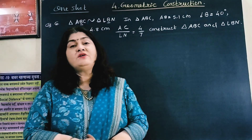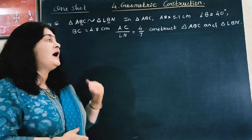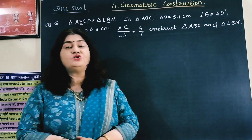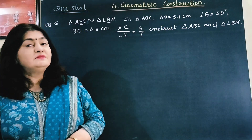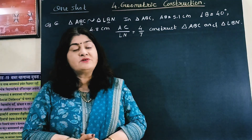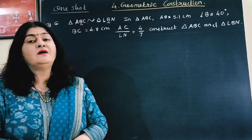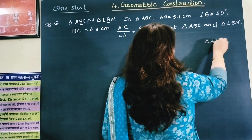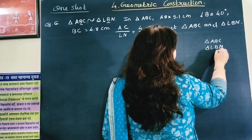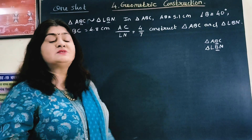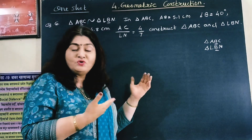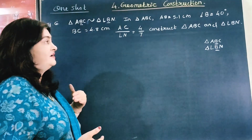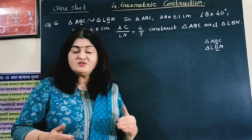In triangle ABC, the measure of segment AB is 5.1 cm, angle B is 40 degrees, and segment BC's measure is 4.8 cm. Moreover, the ratio AC upon LN is given as 4 upon 7, and we are asked to construct triangle ABC and triangle LBN. When we observe these two triangles, B is their common vertex. Let us first draw triangle ABC, where AB is 5.1 cm, so let us take base 5.1 cm.